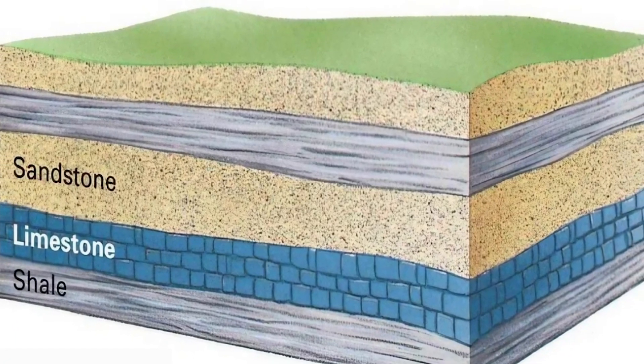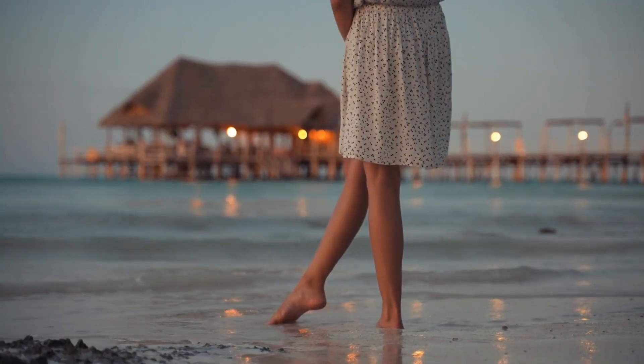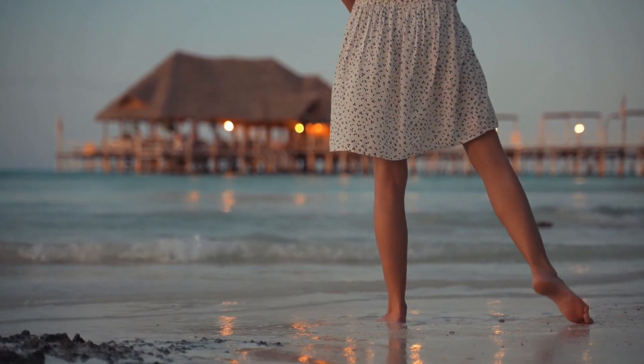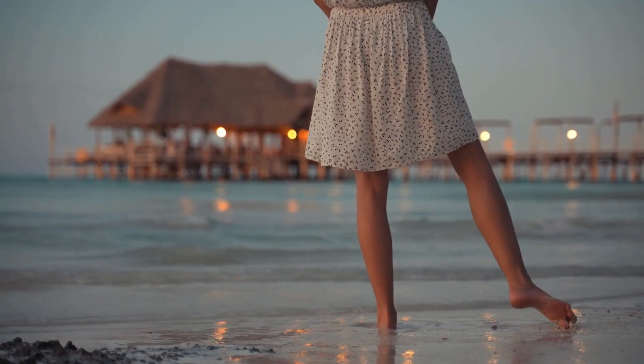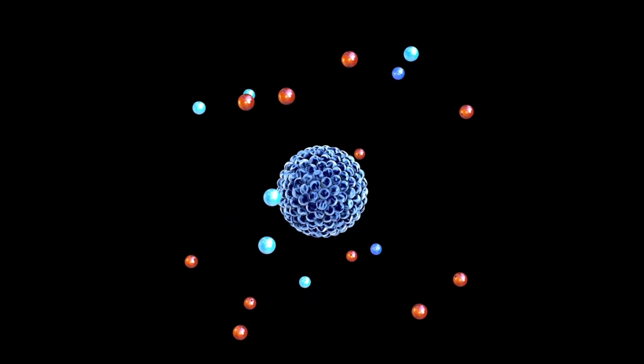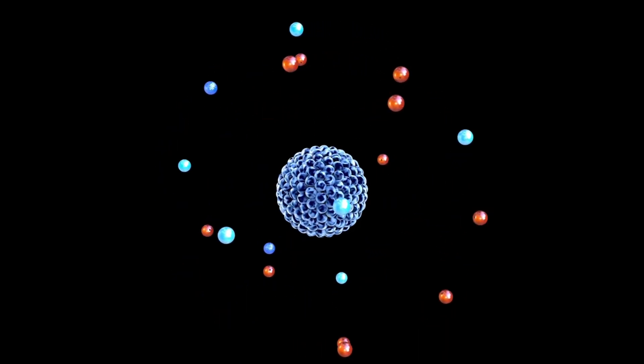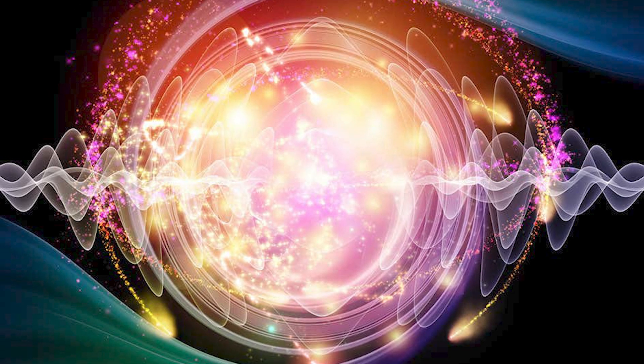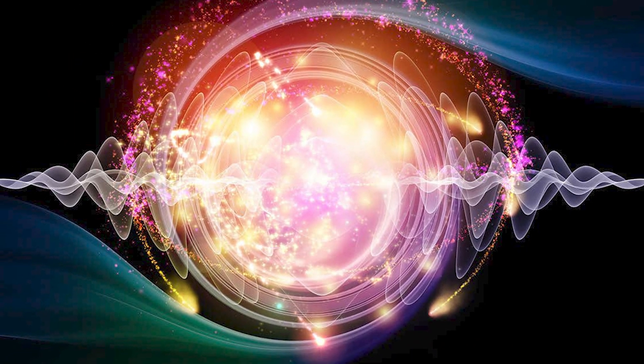Then there's the idea of superposition. Imagine if you were somehow both at work and at the beach until someone actually looked to see where you were. That's superposition. An electron can be in multiple places at once until we measure it, at which point it collapses into one location.